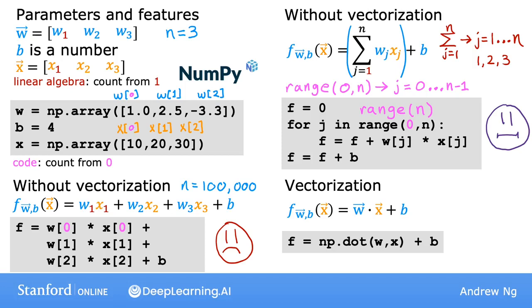I said dot dot because the first dot is the period and the second dot is the function or the method called dot, but it's f equals np.dot(w, x), and this implements the mathematical dot product between the vectors w and x.